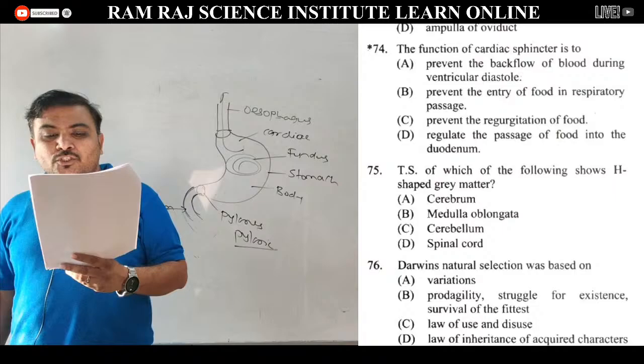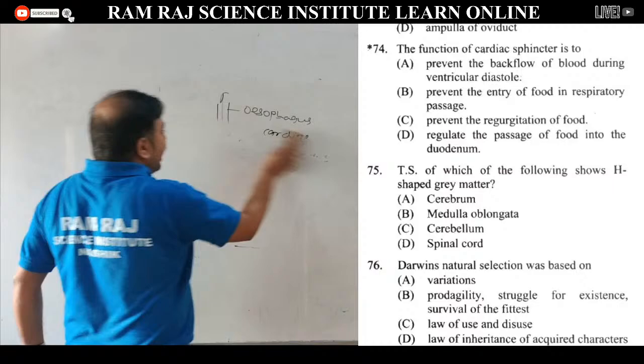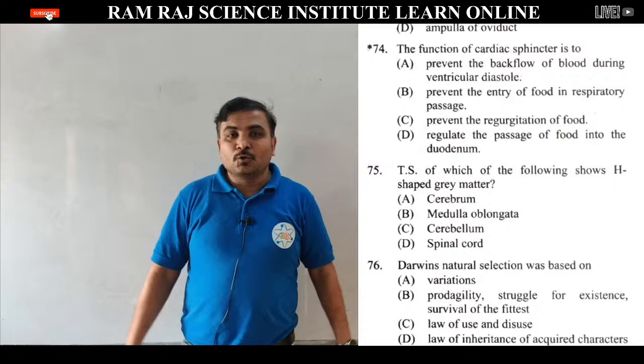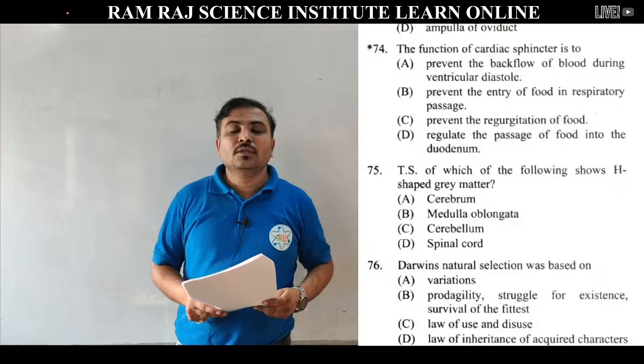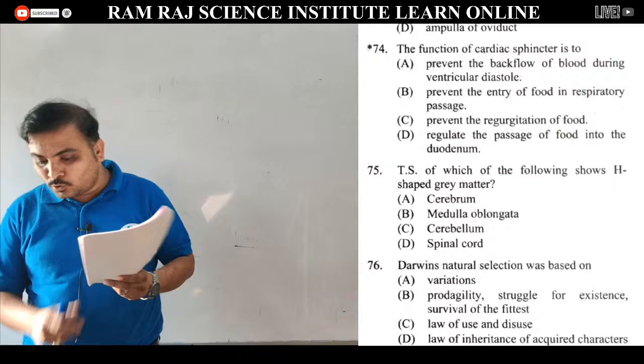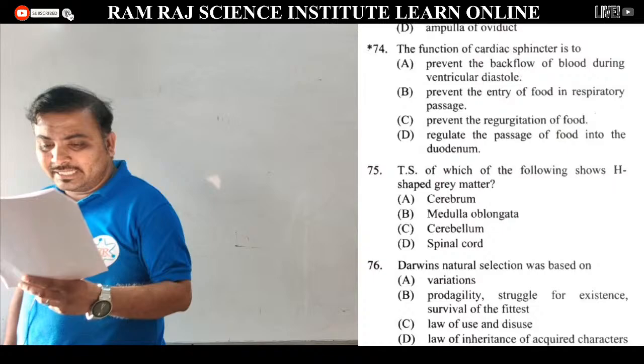Question 75: TS of which of the following shows Y-shape gray matter. Biology में कहीं पर भी अगर TS में Y-shape का gray matter मिल रहा है, तो this is the TS of spinal cord. तो question 75 का answer है spinal cord.